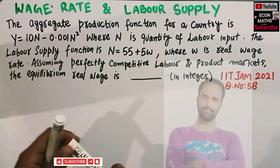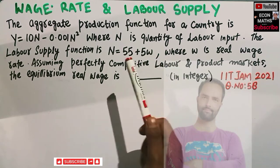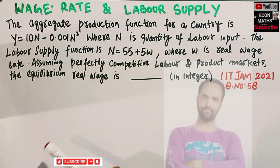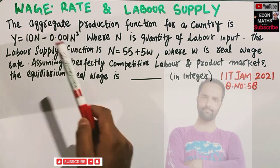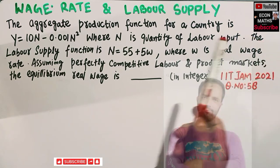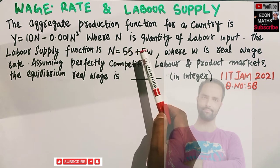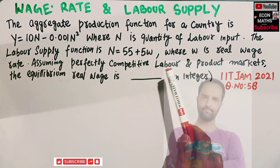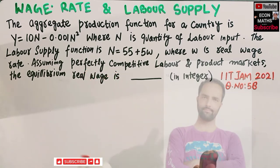In this video we will solve a problem on wage rate and labor supply. This question was asked in JAM Economics paper of 2021. The aggregate production function of a country is given as y = 10n - 0.005n², where n is the quantity of labor input. The labor supply function is given as n = 55 + 5w, where w denotes the real wage rate. Assuming perfectly competitive labor and product markets, we have to find the equilibrium real wage.